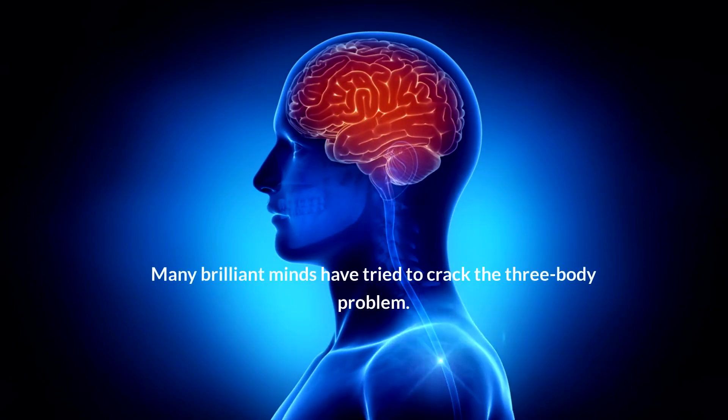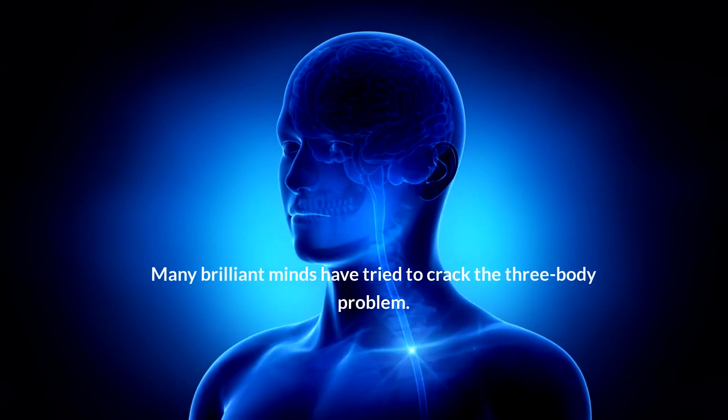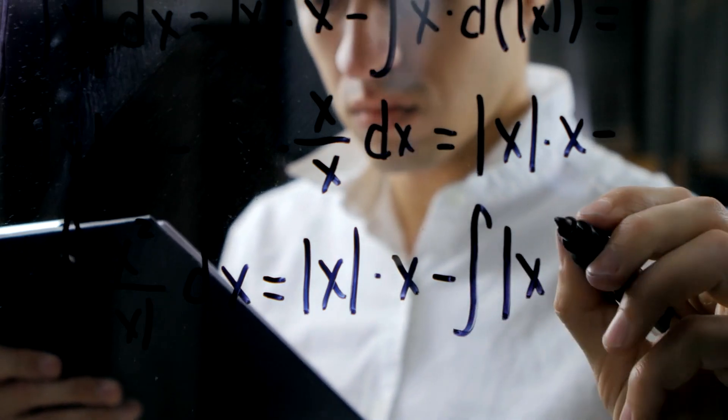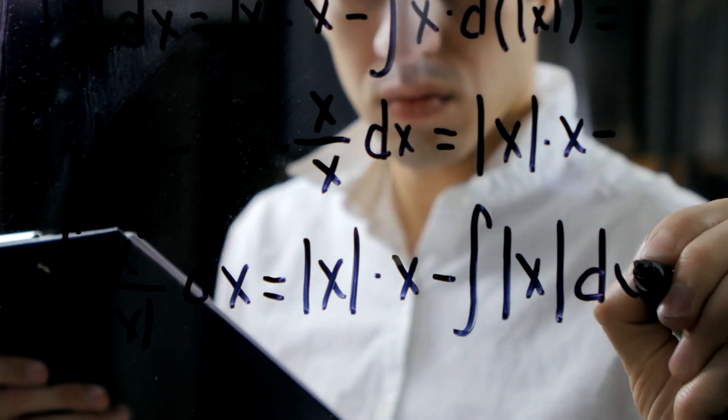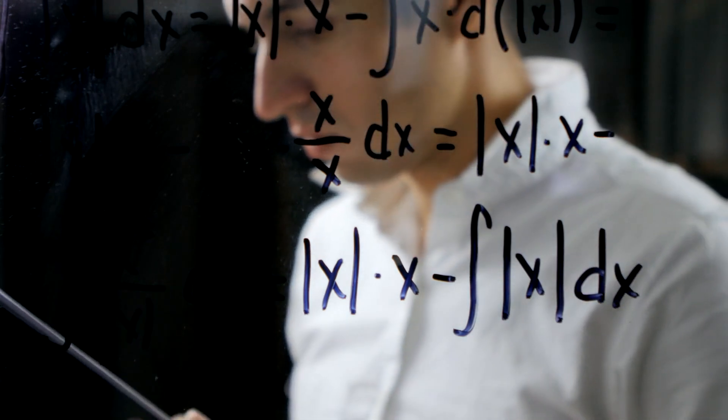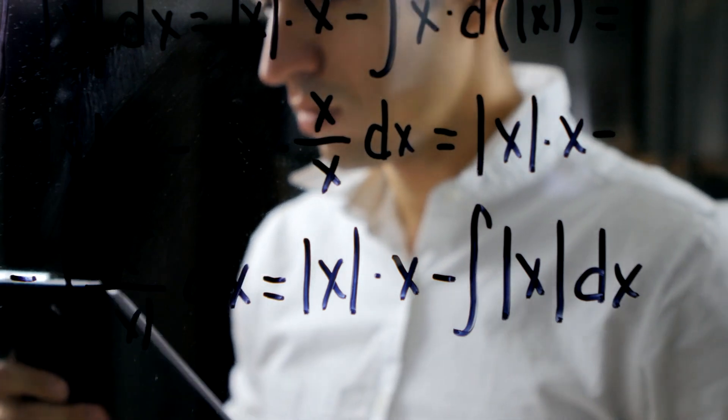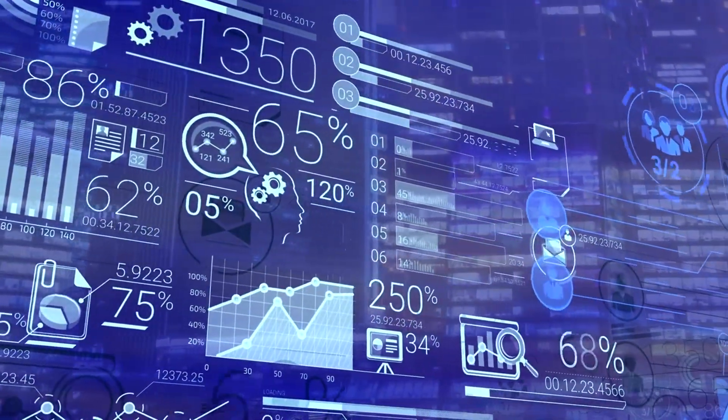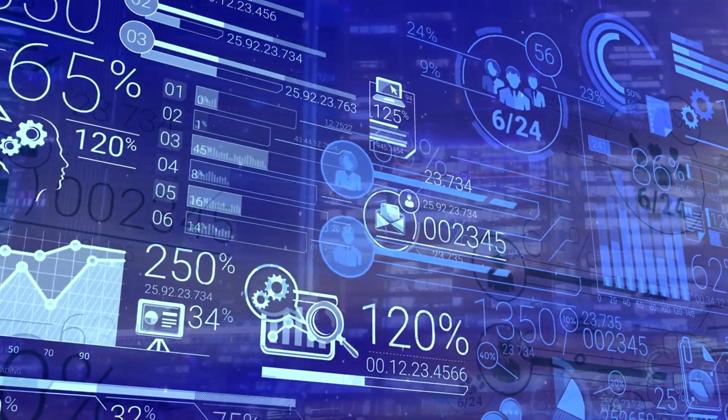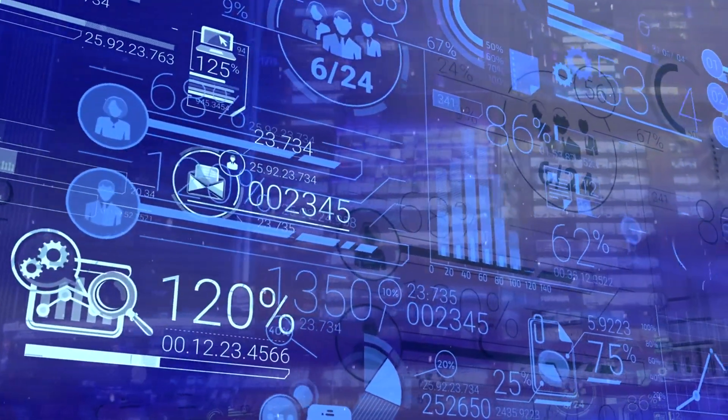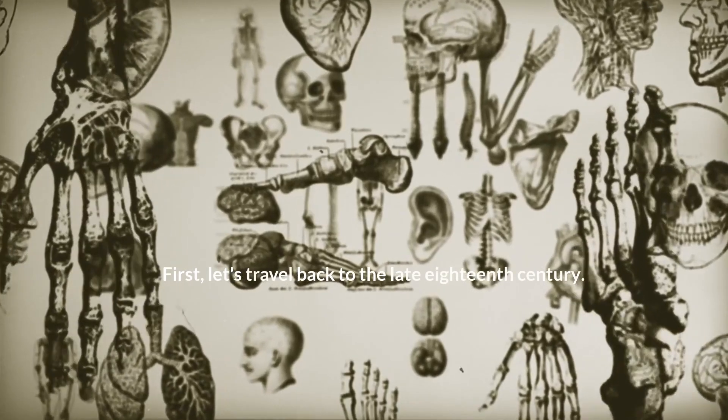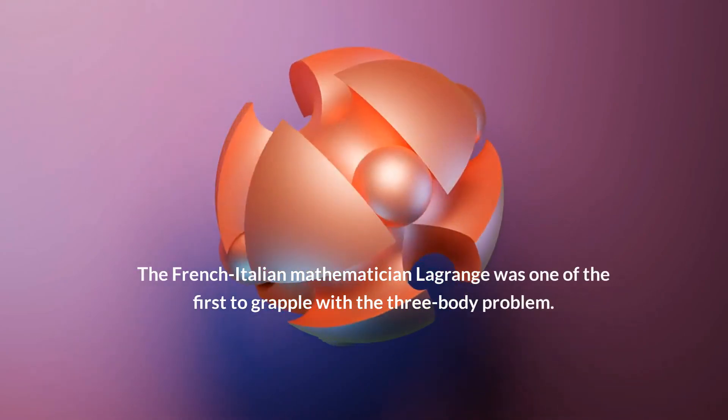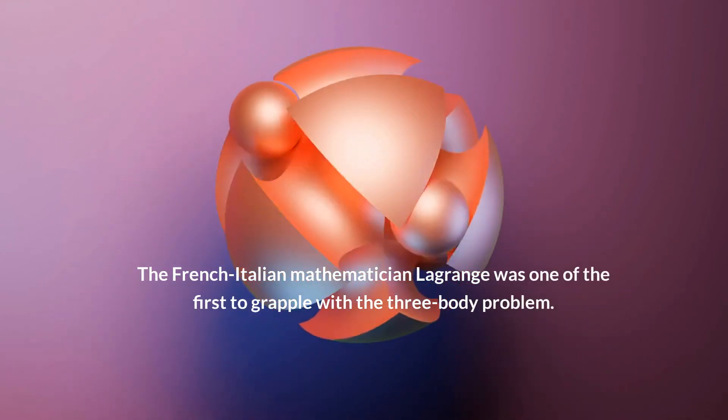Many brilliant minds have tried to crack the three-body problem. When we delve into the annals of scientific history, two figures stand tall in their attempts to untangle the three-body problem: French mathematicians Joseph Louis Lagrange and Henri Poincaré. Their contributions, while not definitive solutions, have deepened our understanding of this cosmic conundrum. First, let's travel back to the late 18th century. The French-Italian mathematician Lagrange was one of the first to grapple with the three-body problem.